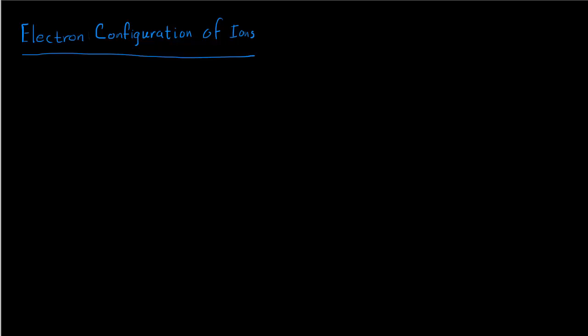The electron configuration of ions is a pretty straightforward extension of what we've already learned about electron configurations. So let's take a simple example. We want to figure out the electron configuration for sodium forming the sodium plus cation. We know that sodium tends to form a plus one charged cation. So let's do the electron configuration for sodium.